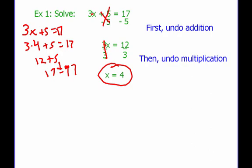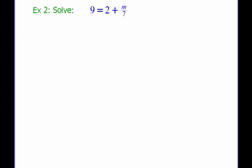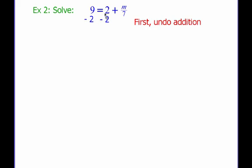Let's take a look at example number 2. Solve: 9 equals 2 plus m divided by 7. We're going to solve this the same way, starting by undoing this plus 2. Because of the commutative property, it doesn't matter whether it's m divided by 7 plus 2, or 2 plus m divided by 7 — we're still adding a positive 2. So to get rid of it, I subtract 2 from both sides. My 2's cancel, and I'm just left with m divided by 7. On the other side, 9 minus 2 gives me 7. So now I have m divided by 7 equals 7.